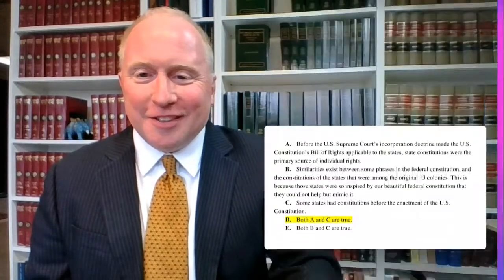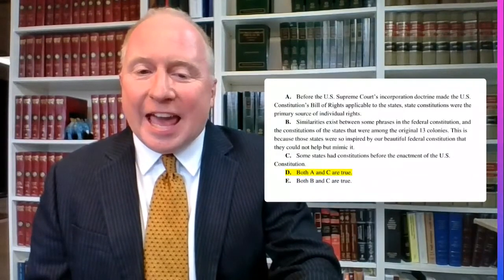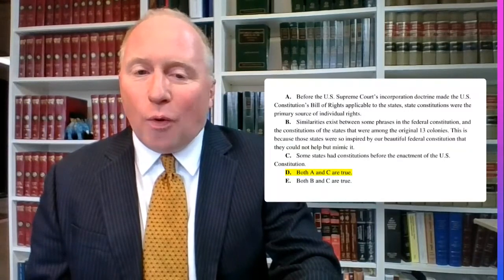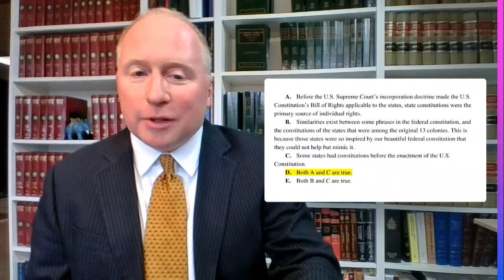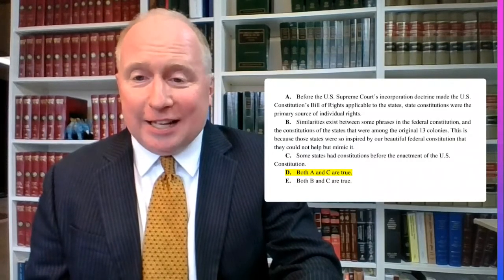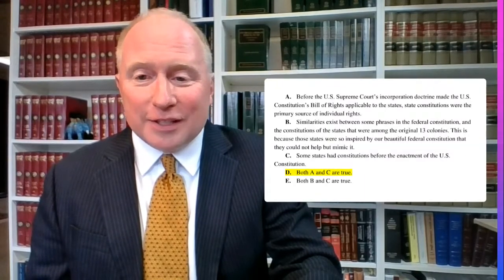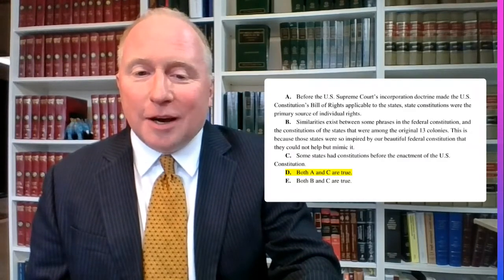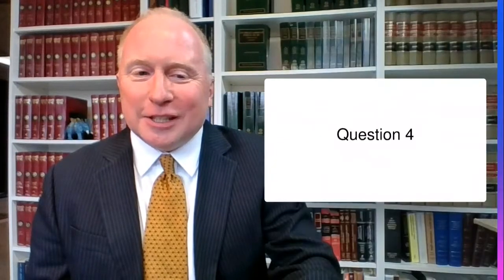The correct answer was Choice D, because both A and C are true. It is true that before the U.S. Supreme Court's incorporation doctrine made the U.S. Constitution's Bill of Rights applicable to the states, state constitutions were the primary source of individual rights for a citizen of a state. And it's also true historically that some states had constitutions before the enactment of the U.S. Constitution. Let's turn now to the next question.